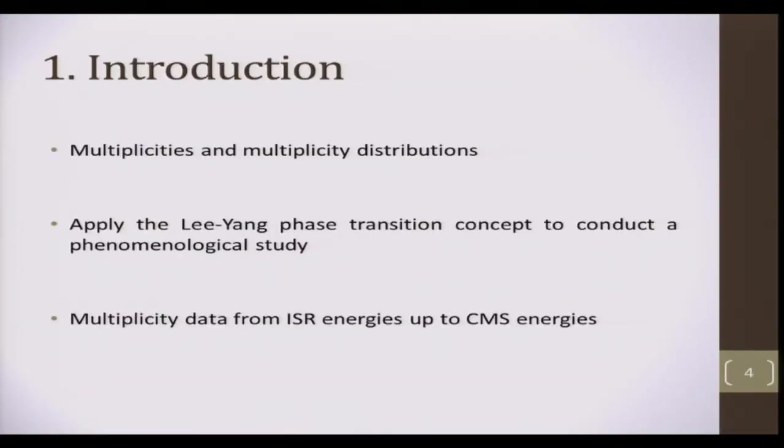The multiplicities that I refer to here will be the final state hadron multiplicities from high energy collisions. In particular, I'm looking at proton-proton collisions at the ISR energy up to CMS energy, about 30 GeV to about 7 tera electron volts.